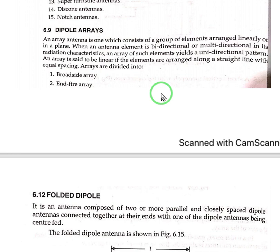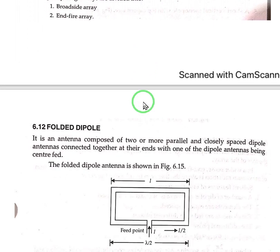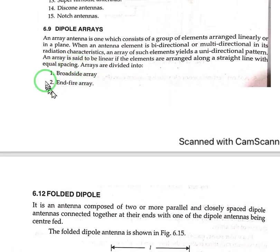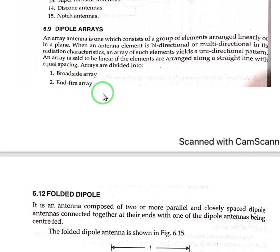When an antenna element is bi-directional or multi-directional in its radiation characteristics, an array of such elements produces a unidirectional pattern. An array is said to be linear if the elements are arranged along a straight line with equal spacing. We have two types of dipole arrays: one is the broadside array and the other is the end-fire array. The broadside array radiates maximum radiation in the direction parallel to the axis of the array, and the end-fire array radiates maximum radiation in the direction perpendicular to the axis of the array.